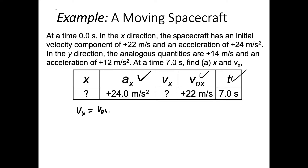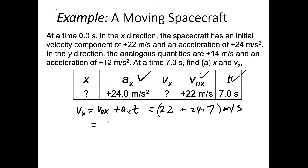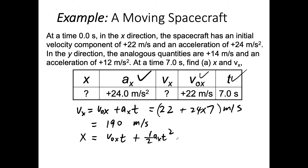In the x direction, we know the initial velocity, the acceleration, and the time. We use the kinematic equation: vx equals v0x plus ax times t. Plugging in: 22 plus 24 times 7 meters per second equals 190 meters per second. For position: x equals v0x times t plus one-half ax t squared. Plug in all the numbers.